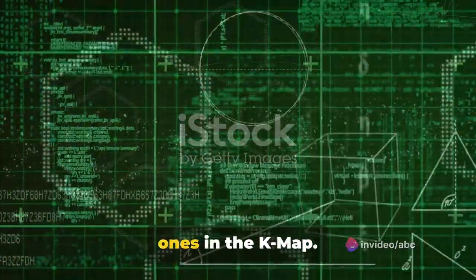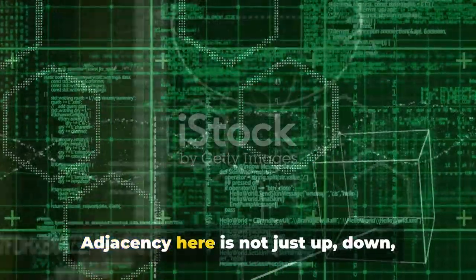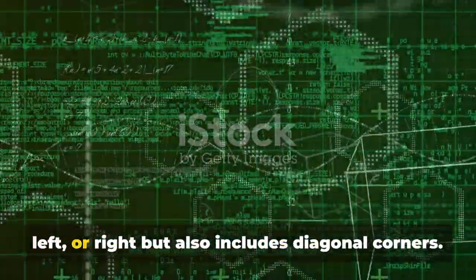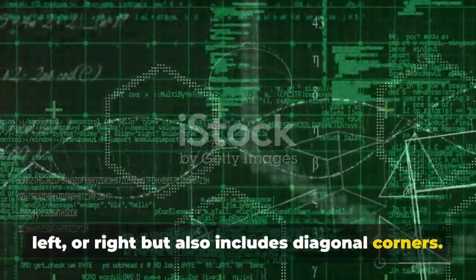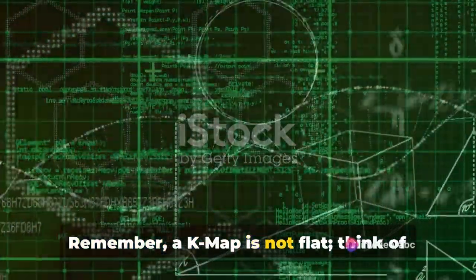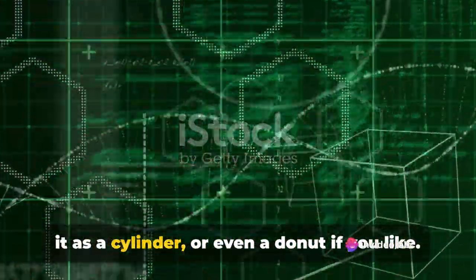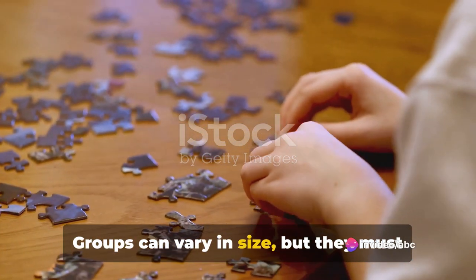First, you'll need to group all adjacent ones in the K-Map. Adjacency here is not just up, down, left, or right, but also includes diagonal corners. Remember, a K-Map is not flat. Think of it as a cylinder, or even a donut if you like.